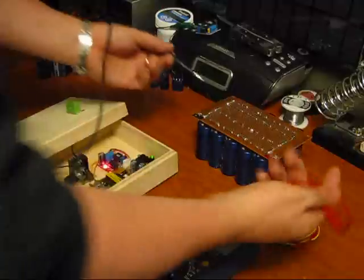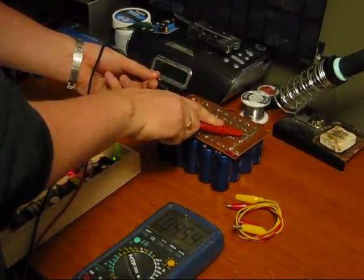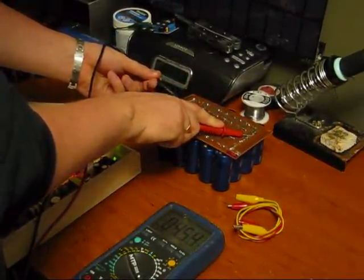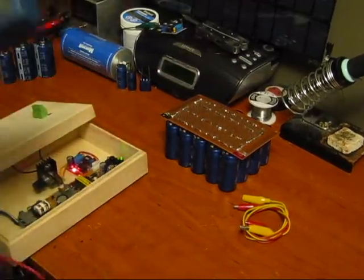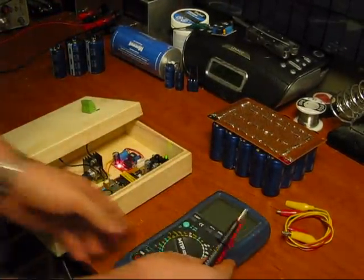Right now, my capacitor bank is rated for 12.5 volts. But it's at 4.54 volts right now. That's a 12.5 volt capacitor bank at 96 farads.